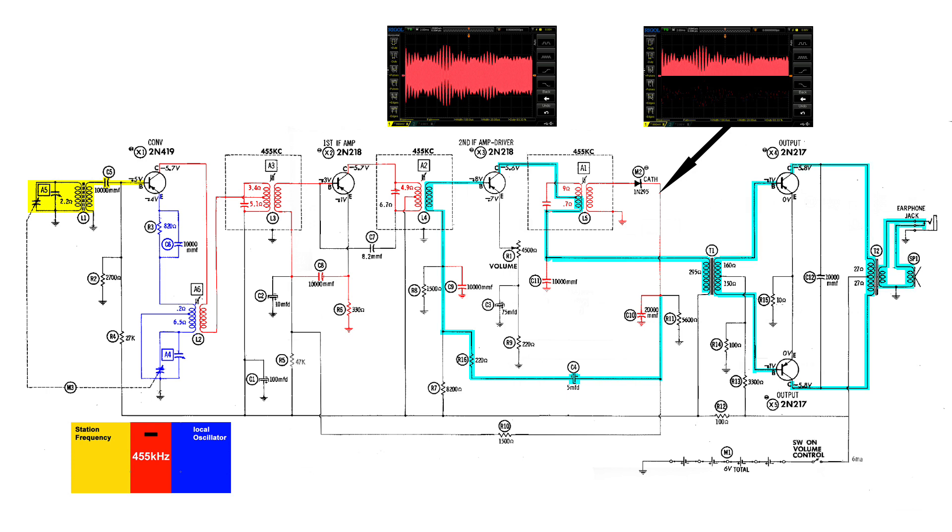Now the signal is strong enough to drive a speaker. This is the AVC, and as the signal increases a higher positive voltage is developed. That gets applied to the base of X2 and that causes X2 not to amplify as much.